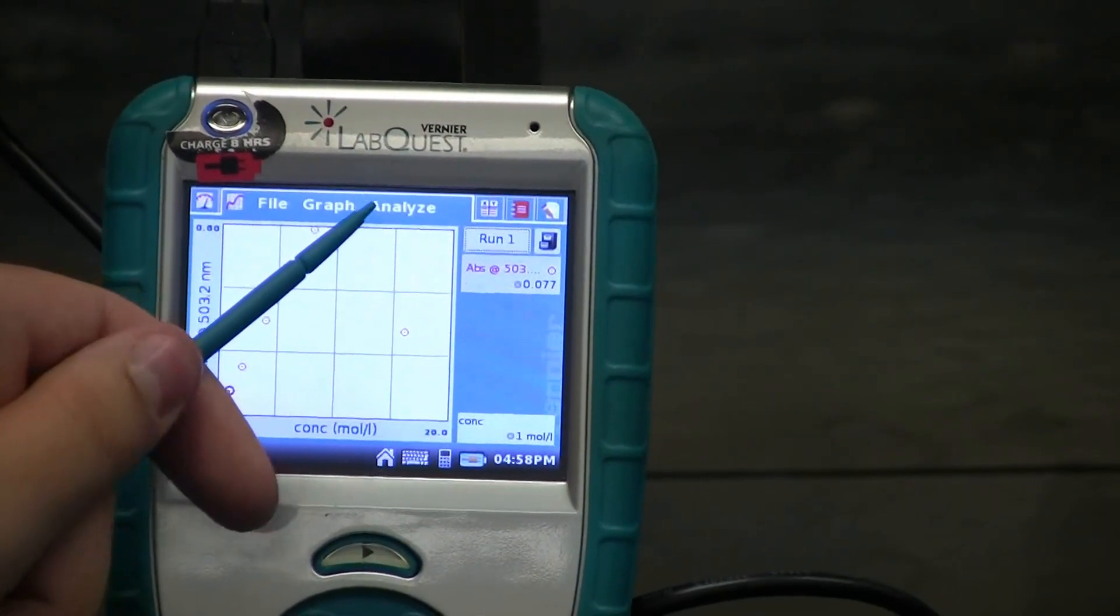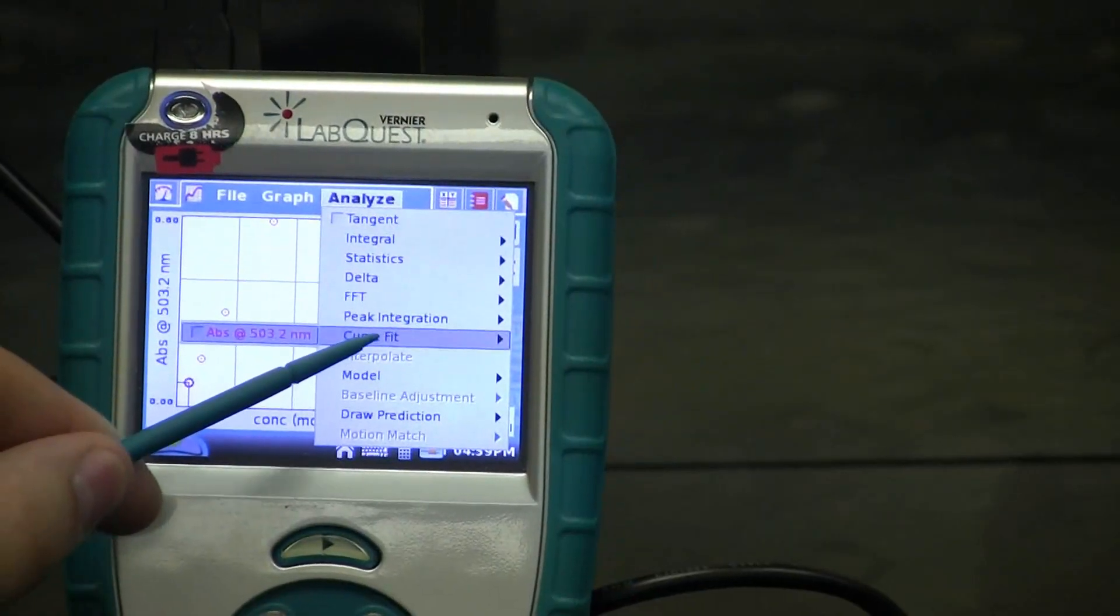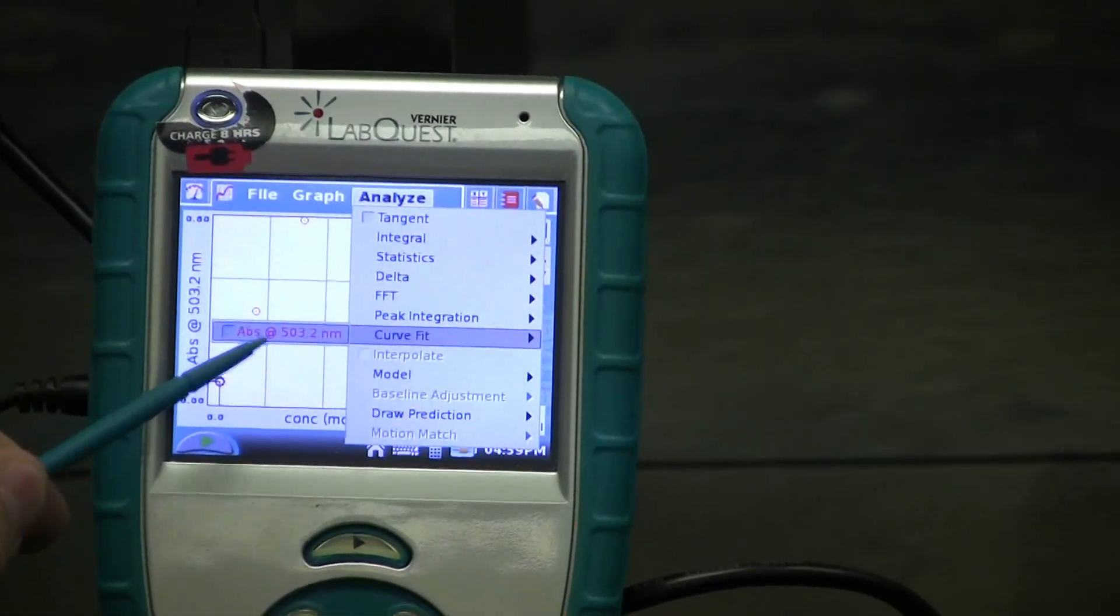To obtain a line of best fit, start by clicking on Analyze, and then Curve Fit, and the absorption next to this.